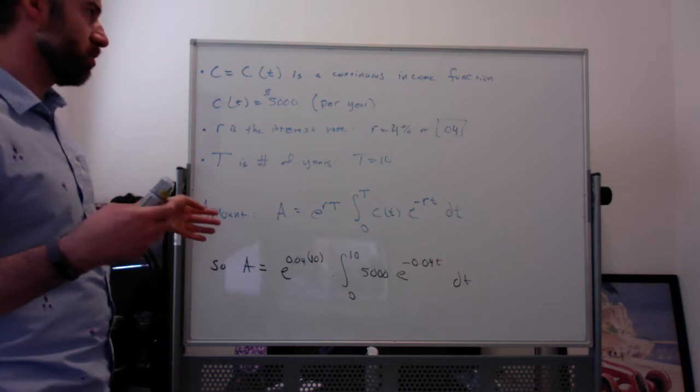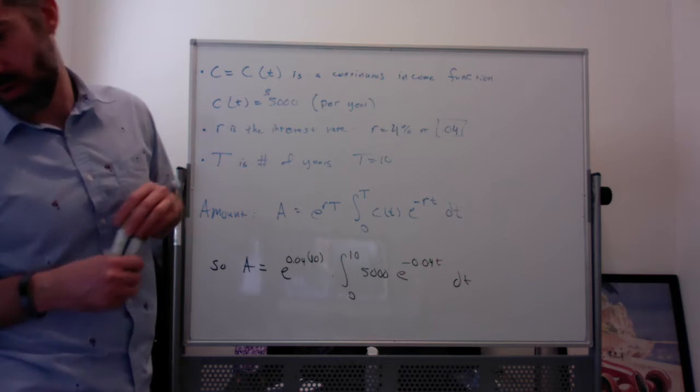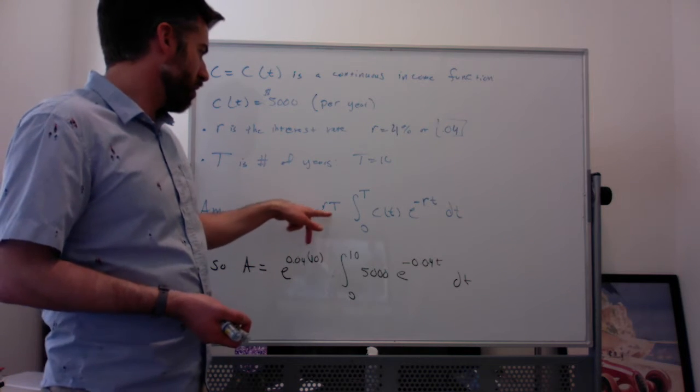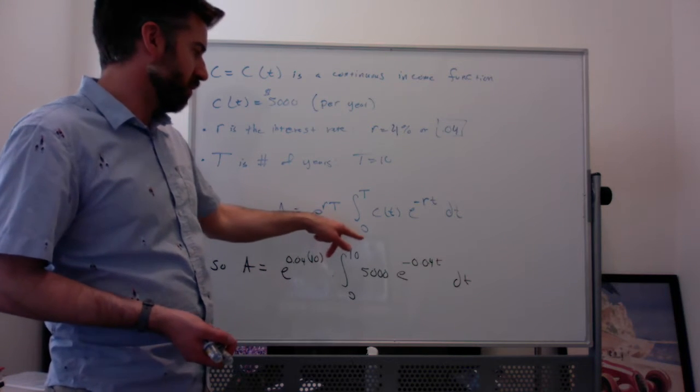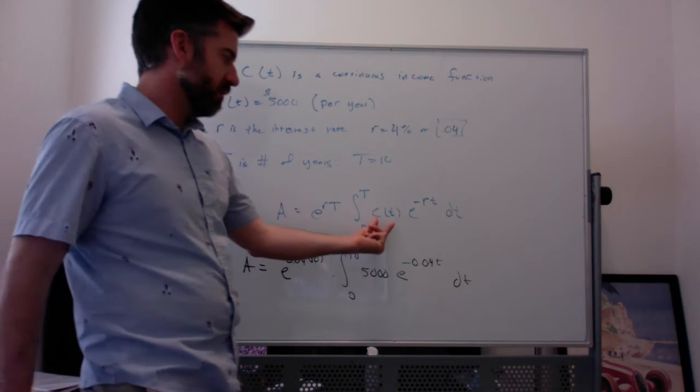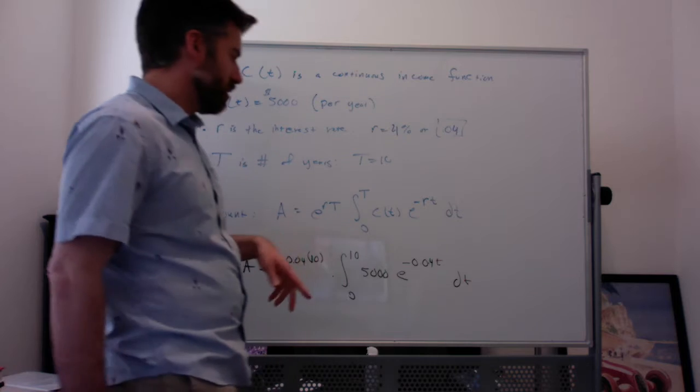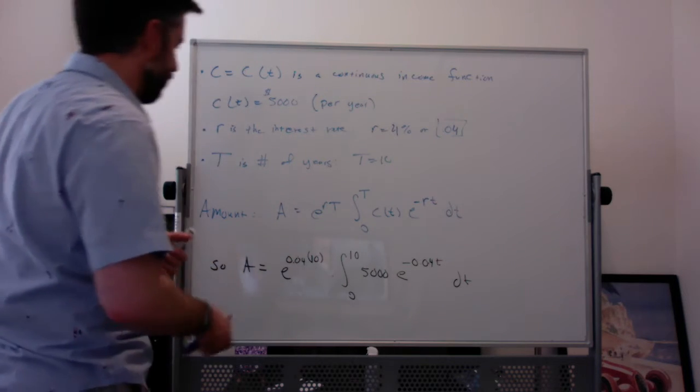And the amount of money earned in those years, or the amount of the annuity is E to the R capital T times the integral from zero to capital T, C of little t times E to the negative R little t dt. So basically, we're just going to fill everything in and we're going to integrate. In this problem,